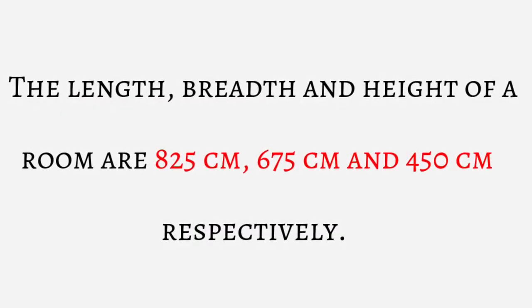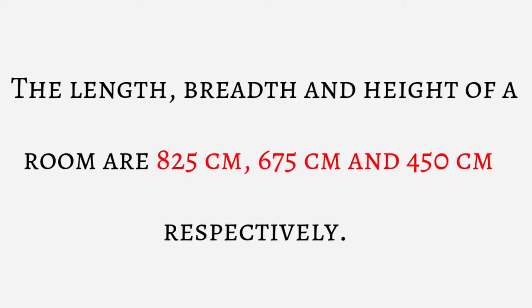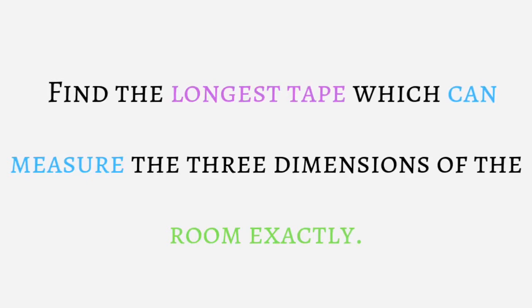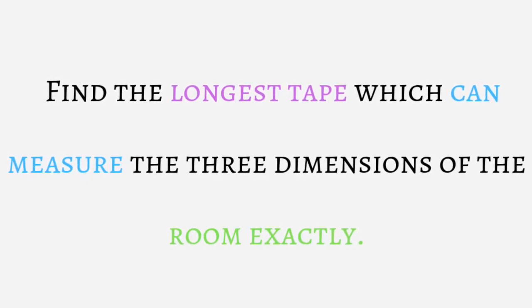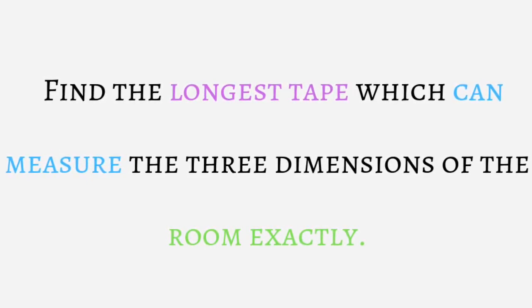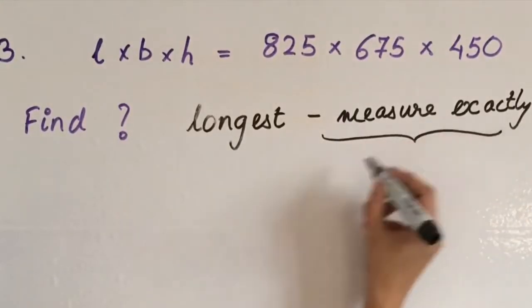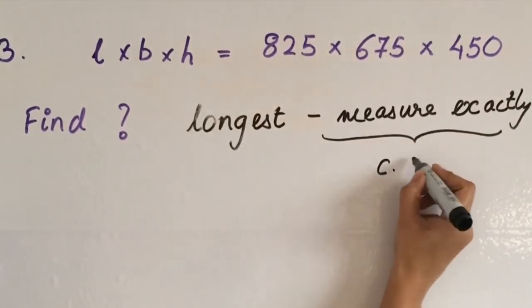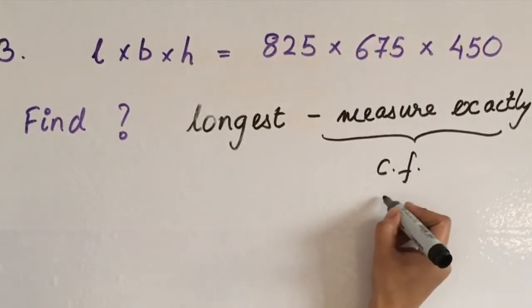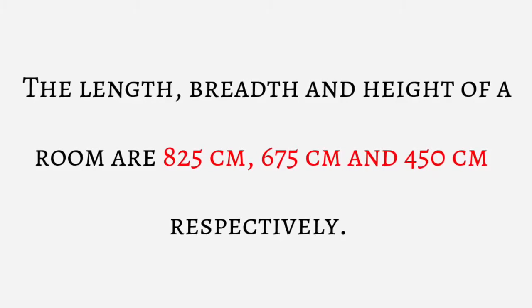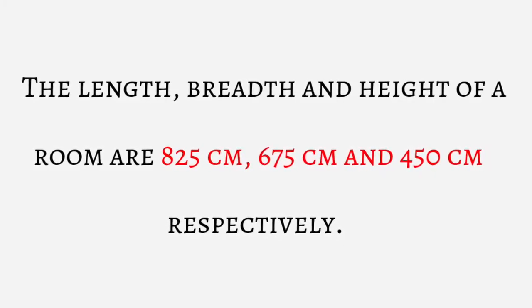Next question. The length, breadth and height of a room are given. Then, what is the longest tape which will exactly measure? Measure exactly means complete division. That means we have to find the common factor, that is HCF. This common factor is the number which will exactly measure the room's dimensions.